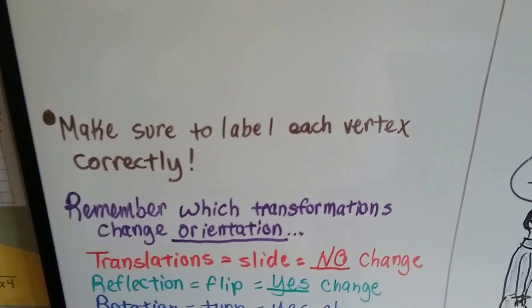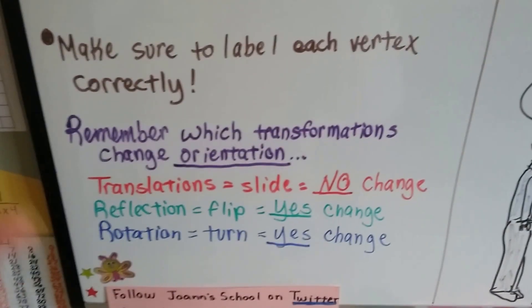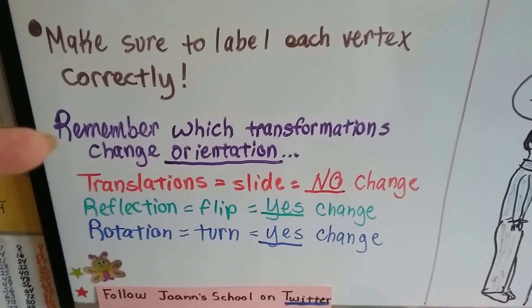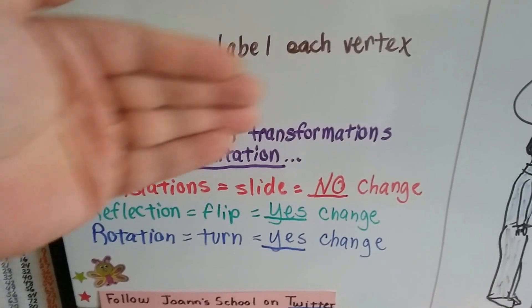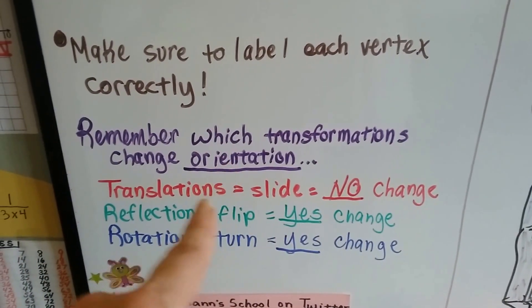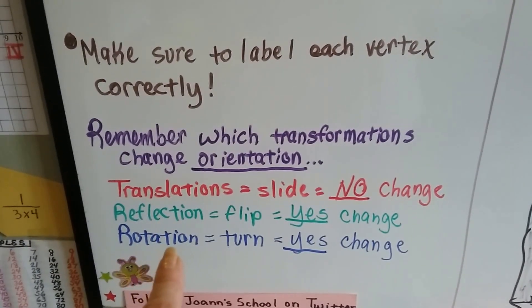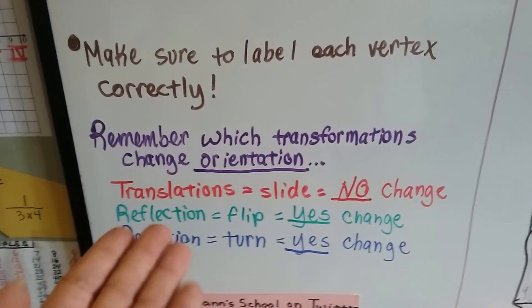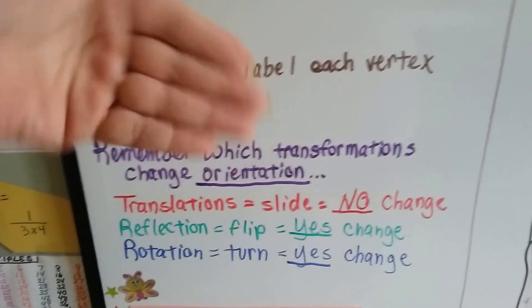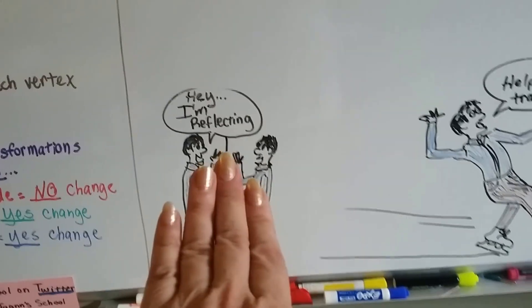We have to make sure we label each vertex correctly, otherwise it's going to get really confusing. And we need to remember which transformations change orientation. Translations, the sliding ones, do not change orientation. But for reflection and rotation, there is a change, because reflection flips the orientation and the rotation turns the orientation.